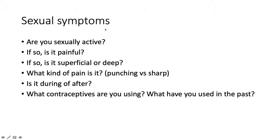Next, sexual symptoms: are you sexually active? If so, is the intercourse painful? If it is painful, is it superficial pain or deep pain, and what kind of pain is it — a punching pain or a sharp pain? Based on experience, a punching pain refers to involvement of the ovaries, like getting kicked in that area during sex, whereas a sharp pain is more indicative of endometriosis. Is the pain during intercourse or after intercourse? And what contraceptives are you using and what have you used in the past?